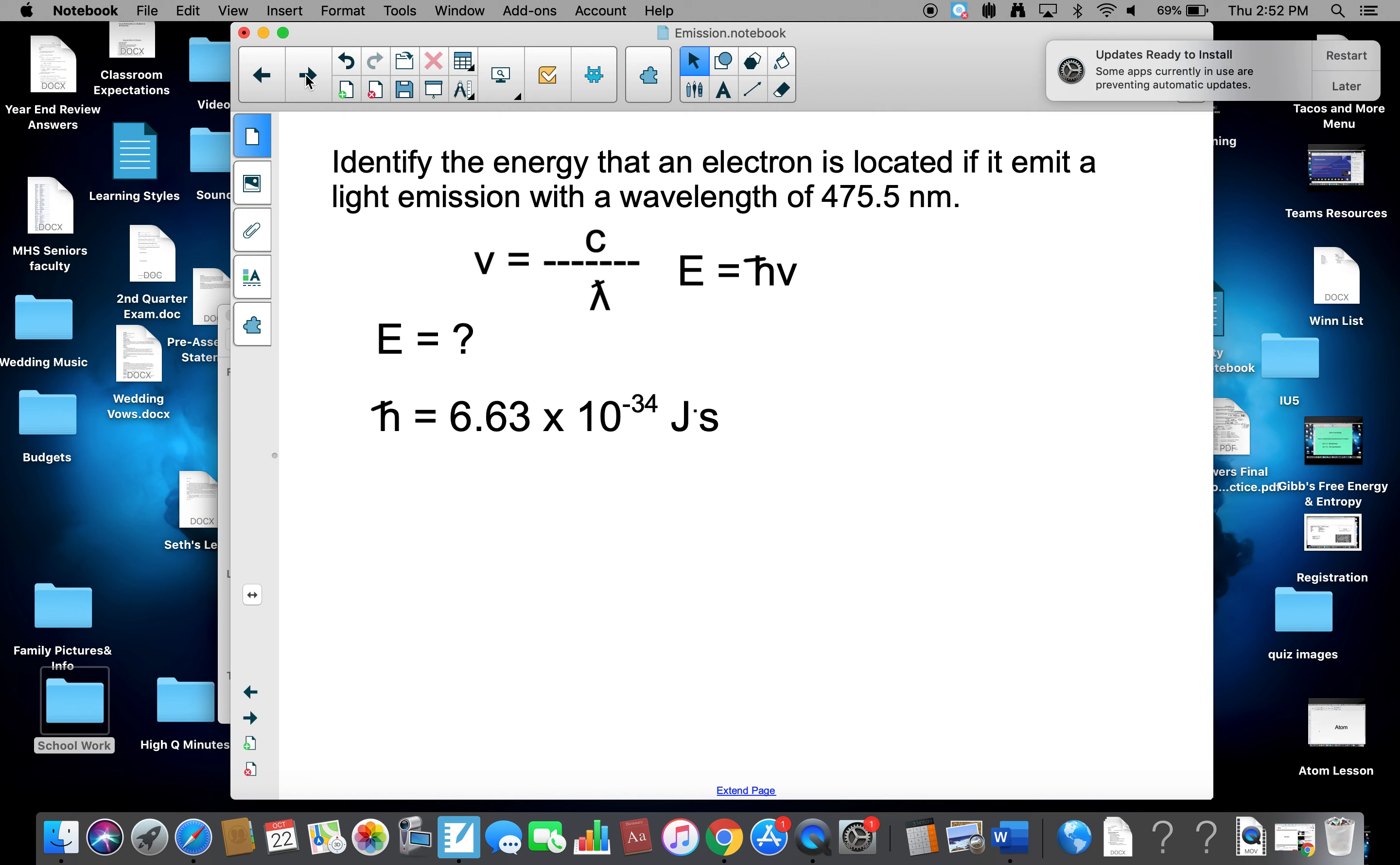I'm going to go over some more space. Planck's constant is h. We also know what frequency is. So we have to use the other equation. So again, nu equals unknown. C is the speed of light, 3 times 10 to the eighth. And wavelength is 475.5 nanometers.